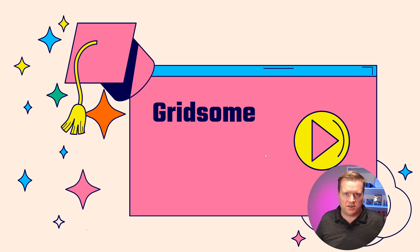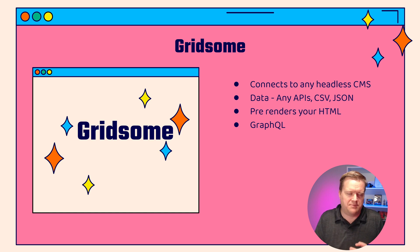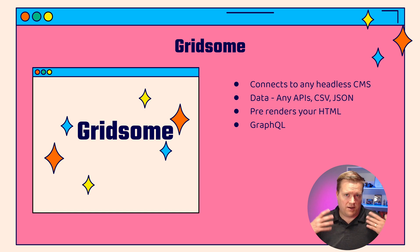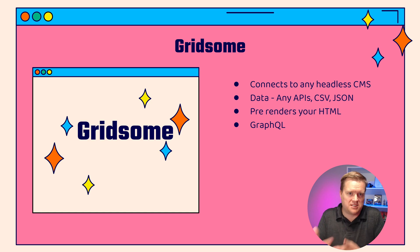Gridsome is something that came along a couple of years ago. You may want to use Gridsome if you're trying to connect to any headless CMSs. It has a bunch of plugins and modules that make it easy, and you can grab data from any API, CSV files, JSON, text files — whatever you want. It pre-renders your HTML and has GraphQL in the background. This is analogous to Gatsby on the React side. I keep hearing more things about it and they're adding more features. I believe right now it's mostly Vue 2, but I think they'll support Vue 3 shortly. Check it out if you're interested in a Jamstack-type site.